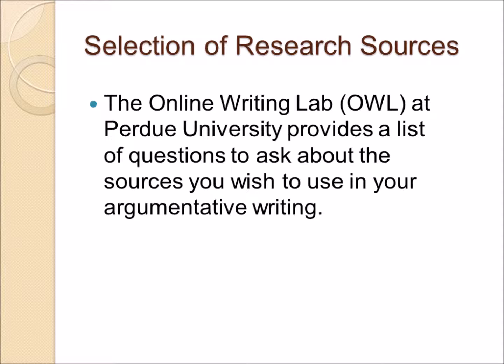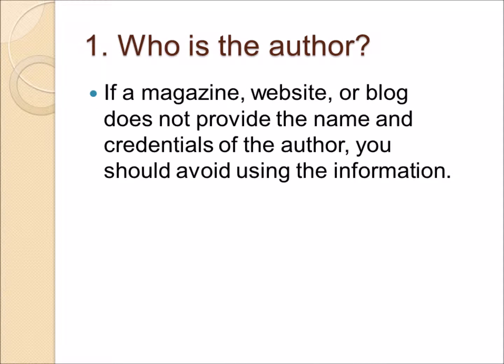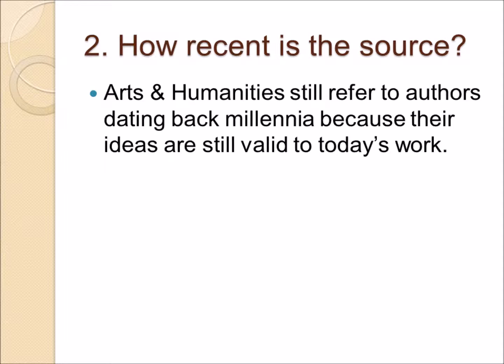The Online Writing Lab at Purdue University provides a list of questions to ask about the sources you wish to use in your argumentative writing. Question number one: Who is the author? If a magazine, website, or blog does not provide the full name and credentials of the author, you should avoid using the information. The source isn't credible because the audience and or reader has no way to judge the expertise and knowledge of the author.